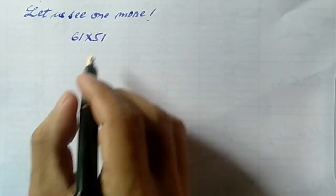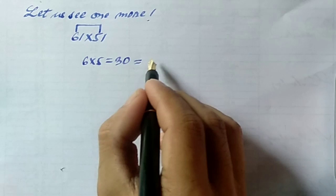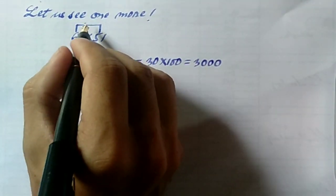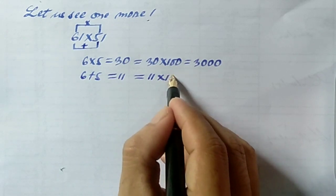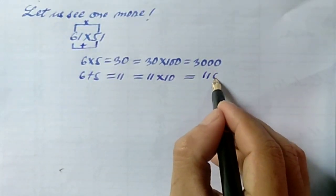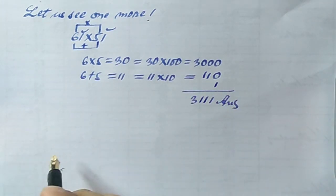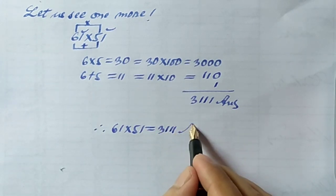Let us see one more example of 61 into 51. Here let us take 6 and 5 like before. 6 into 5 gives us 30, and this 30 should be multiplied with 100, it gives us 3000. Then let us take 6 plus 5, that equals 11. This 11 is multiplied with 10, so we get 110. Now let us take 1 like before and add: 3111. That is, 61 into 51 gives us 3111.